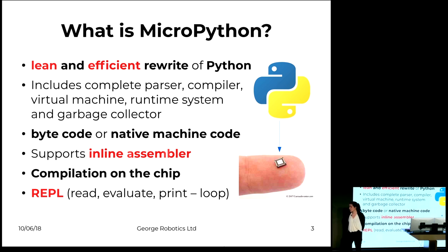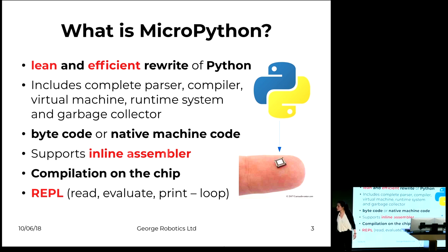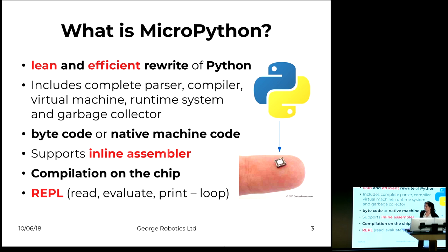You can compile to bytecode or native machine code. It supports an inline assembler, and all compilation happens on the chip, which means you don't have to install anything on your PC — everything is interpreted on the controller. You're all Python programmers, so you're very familiar with the REPL; you can use this just like normal Python.